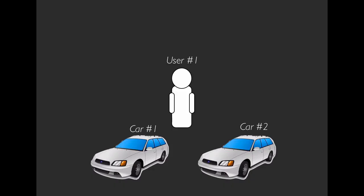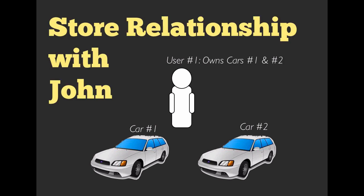Well, let's say that instead of John, it's a user with a primary key of one, and we have two different cars — car number one and car number two. The first instinct would be to store that relationship with John, with our user number one. In that same table, we could say user number one and then have a cars field where we keep a comma-separated list of cars. So user number one knows they own car number one and car number two, and the cars don't know who owns them in this situation.